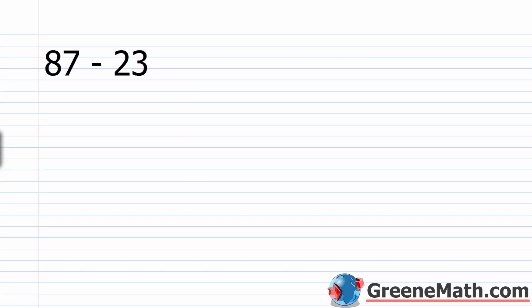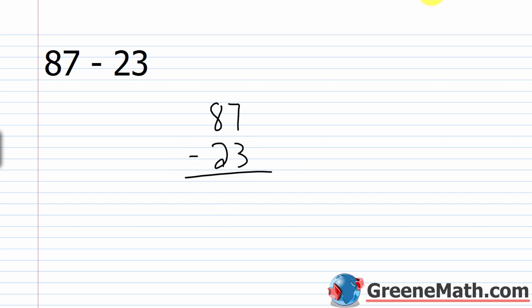Let's look at 87 minus 23. Stack these numbers on top of each other, aligned by place value: 87, your minuend, goes on top, and 23, the subtrahend, goes on the bottom. Subtract beginning in the ones column: 7 minus 3 is 4. Then work to the left — now we're in the tens column: 8 minus 2 is 6. So our answer here is 64.